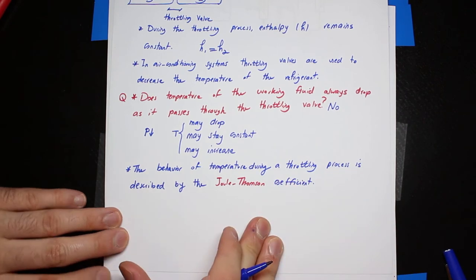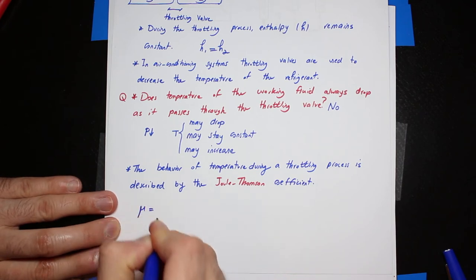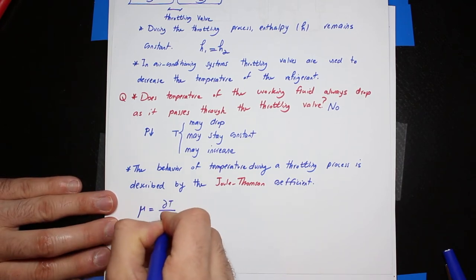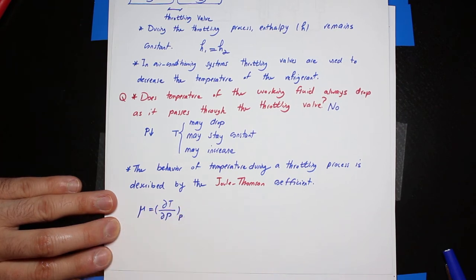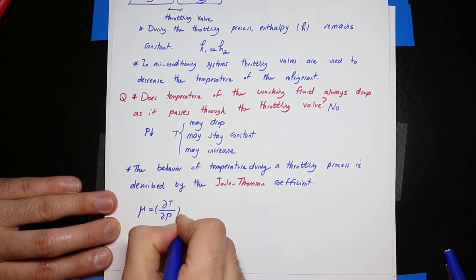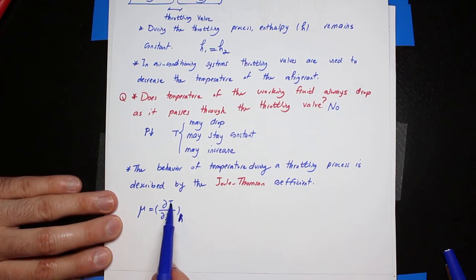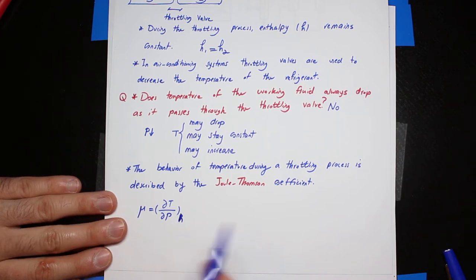We show the Joule-Thompson coefficient by μ, and μ is equal to the partial derivative of T with respect to P when enthalpy H is held constant — that is, the change of temperature with respect to pressure when enthalpy is constant.